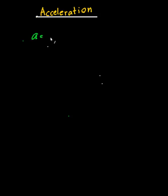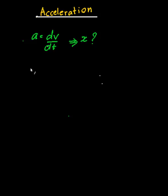In this video I'm going to be talking about acceleration in terms of displacement. This might be a new concept because you're used to saying acceleration equals the change in velocity over the change in time — that's the usual notation. But it turns out you can write it in terms of displacement x as well. So the question we're going to answer is: how do we do this?